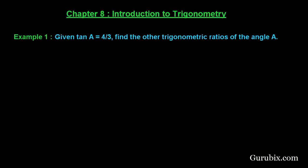Welcome friends. Let us solve example number 1 of chapter 8. The example says: given tan A equals 4/3, find the other trigonometric ratios of angle A.